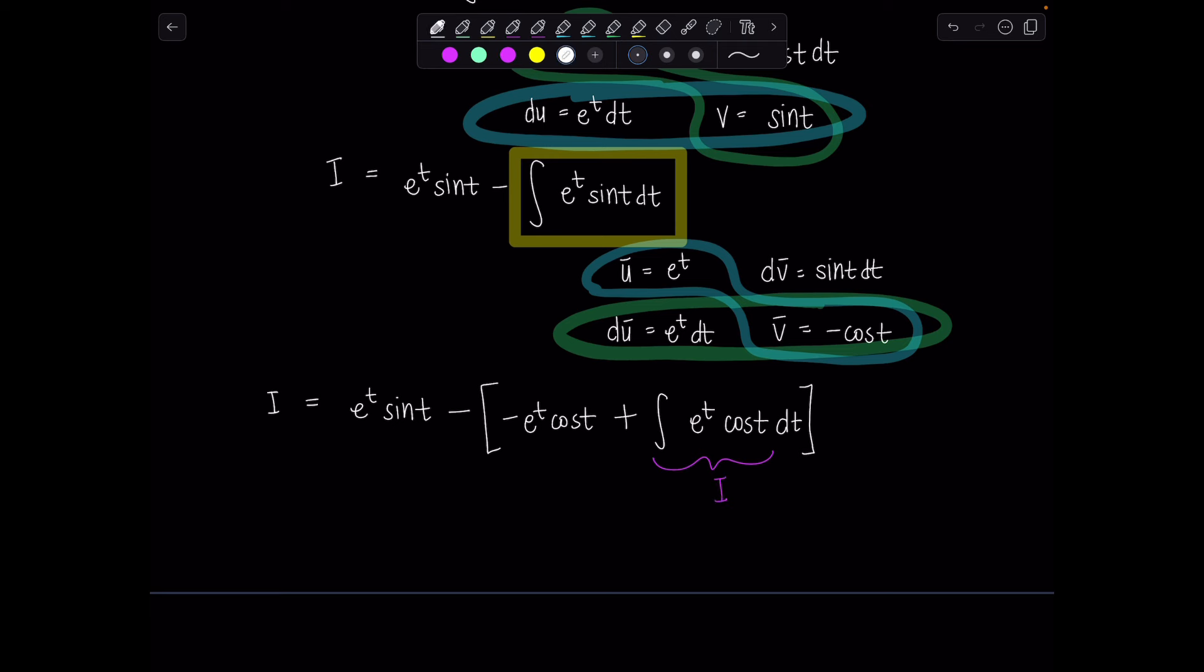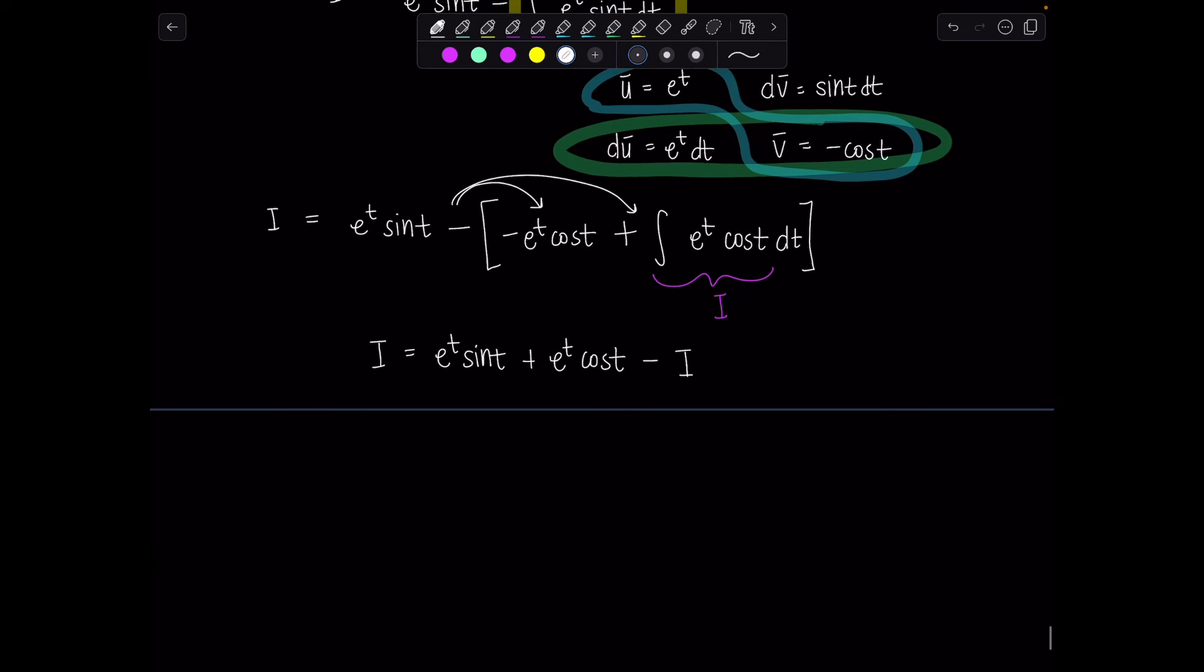And then this is the great moment where the boomerang has returned to us. Do you notice? How did we define i? i is antiderivative of e to the t times cosine t dt. Here it is, coming back home. So you can replace all of this with i. So then I have my original integral i equals e to the t sine t plus e to the t cosine t minus i. This minus sign is distributed.